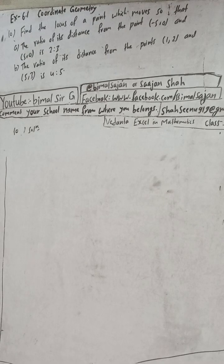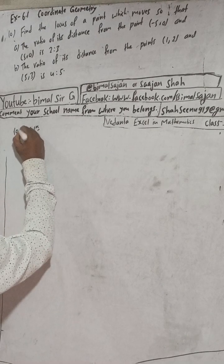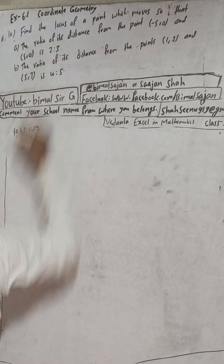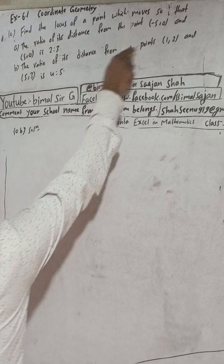Hi class 9 and 10 students, welcome back to Bhimal Sir G YouTube channel. This is question number 10B, exercise 6.1, coordinate geometry, class 9 OPT Mathematics. The question is: can we find the locus of a point which moves so that the ratio of its distance from the points (1,2) and (5,3) is 4:5? I have already solved this.